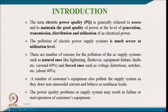The pollution of electric power quality systems is much more severe at the utilization level, because of the variety of equipment or loads connected there. There are a number of reasons for pollution of the AC supply system, such as natural ones like lightning, flashover, equipment failure, and faults.